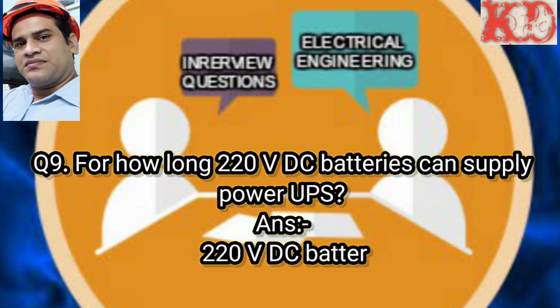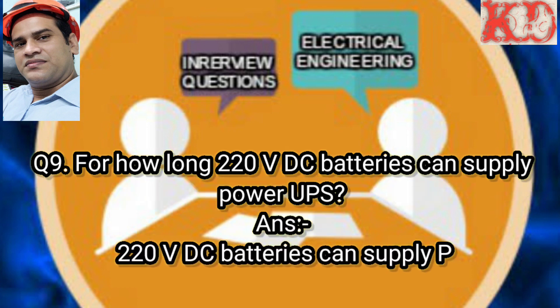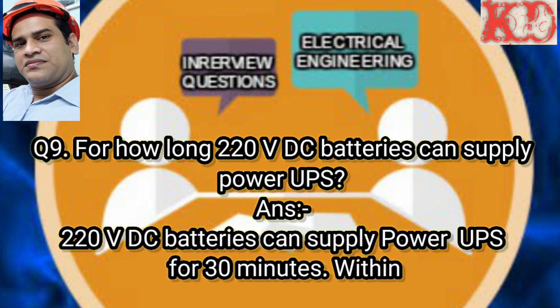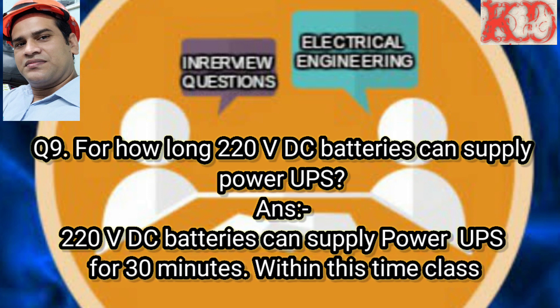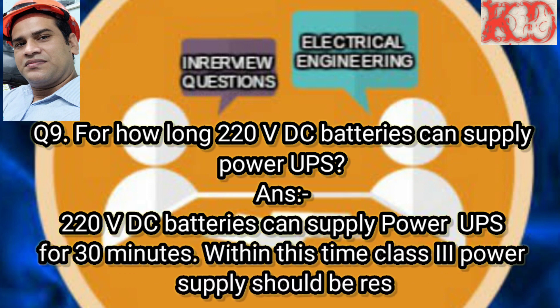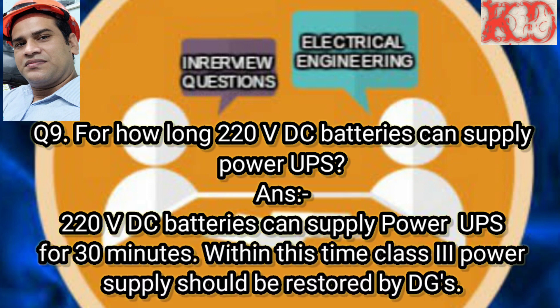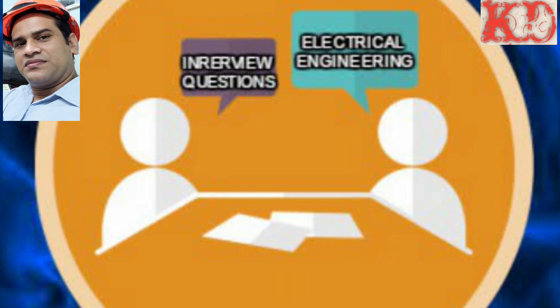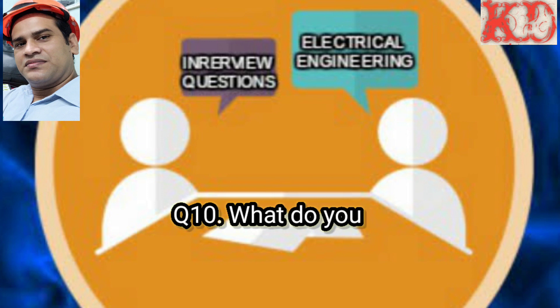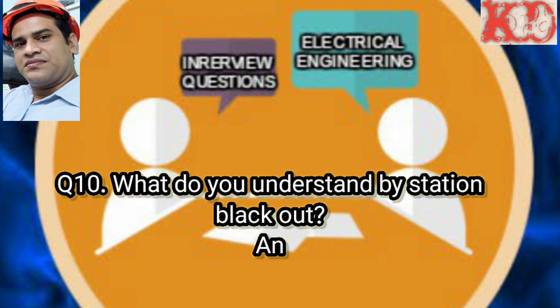Question number 9: For how long can 220 volt DC batteries supply power to UPS? Answer: 220 volt DC batteries can supply power to UPS for 30 minutes. Within this time, class 3 power supply should be restored by diesel generators.